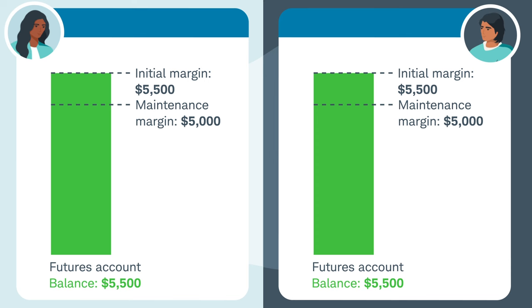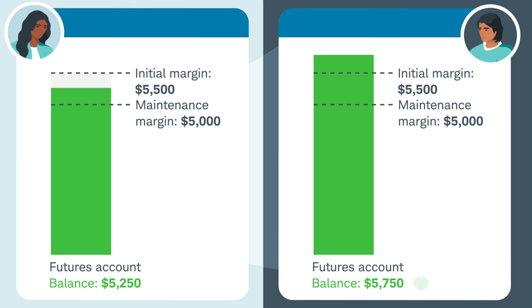Because Trader A lost $250, her account was debited, reducing her account balance to $5,250. Trader B profited $250 and was credited those profits, so his account balance grew from $5,500 to $5,750.